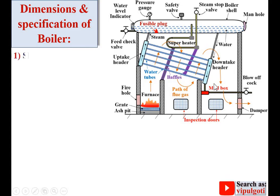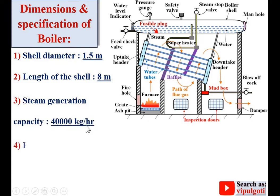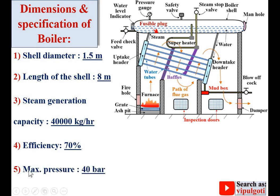The dimensions and specifications of the Babcock-Wilcox boiler: shell diameter is 1.5 meters, length of the shell is 8 meters, steam generation capacity is 40,000 kg per hour, efficiency is approximately 70 percent, and the maximum pressure of the steam is 40 bar. This is the typical specification of the Babcock-Wilcox boiler, but it can vary slightly.